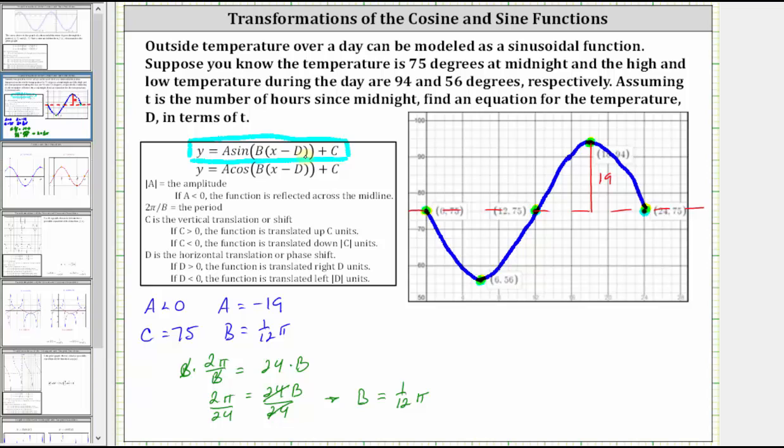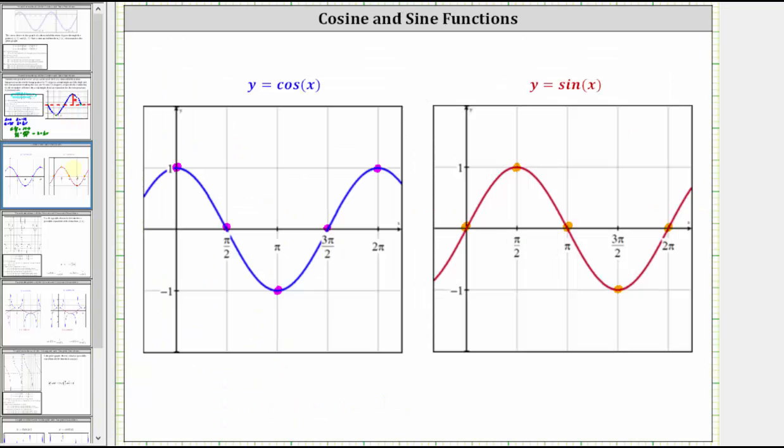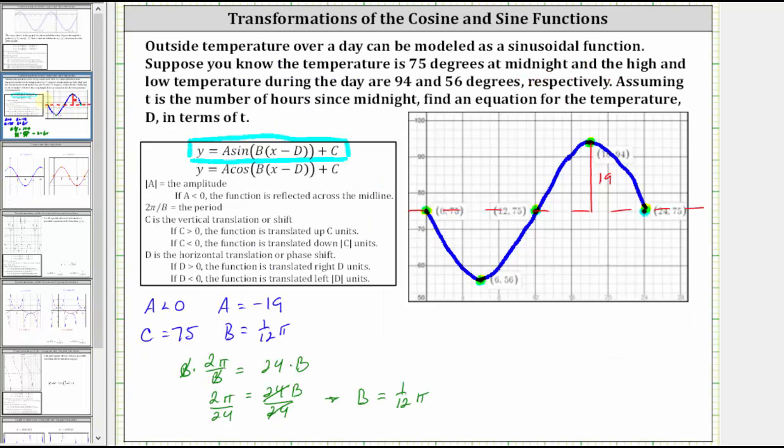And now to determine the value of d, where again, d indicates a horizontal shift, or a phase shift. When graphing one period of the basic sine function, we normally start at the midline along the y-axis, and since our graph starts at the midline along the y-axis, we do not have a phase shift or horizontal shift, and therefore, d is equal to zero.